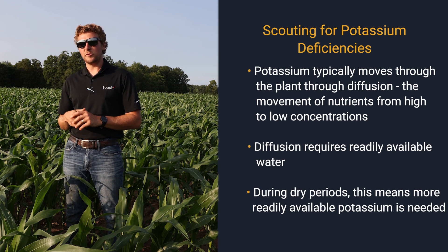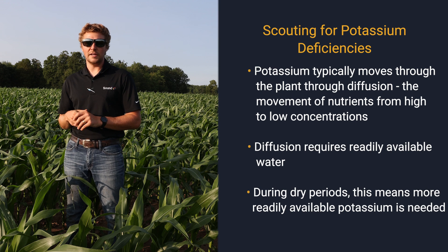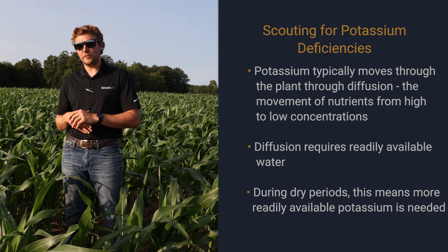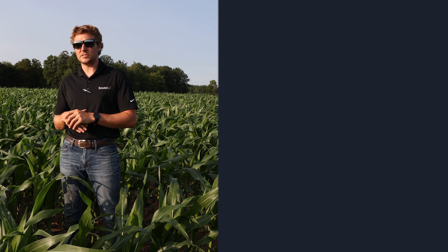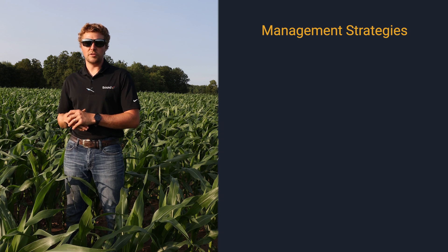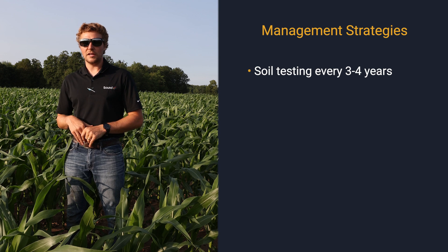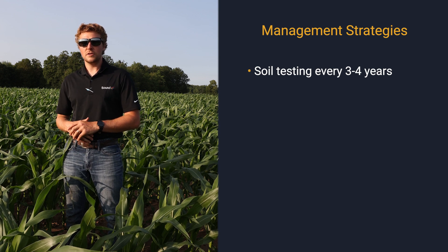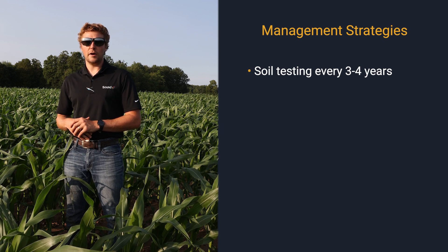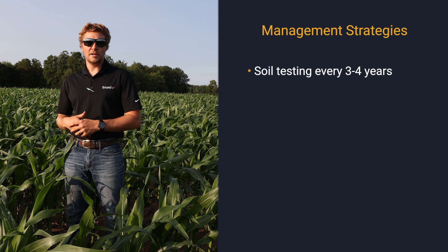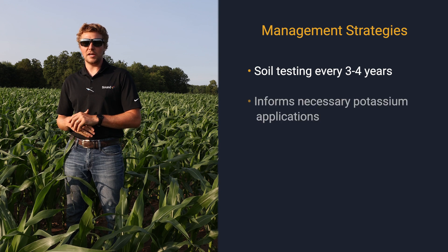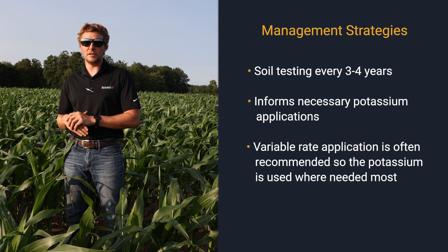There are a few different management strategies we can take to really hit this head on and be proactive about it versus taking a reactive stance. One of those is making sure we're doing rigorous soil testing — every three to four years, pulling a soil test typically on a two-and-a-half-acre grid, so we can get a good feel for what's going on in our fields and how we're tracking with potassium. A variable rate prescription is often recommended so we can increase ROI and put the potassium where we really need it most.